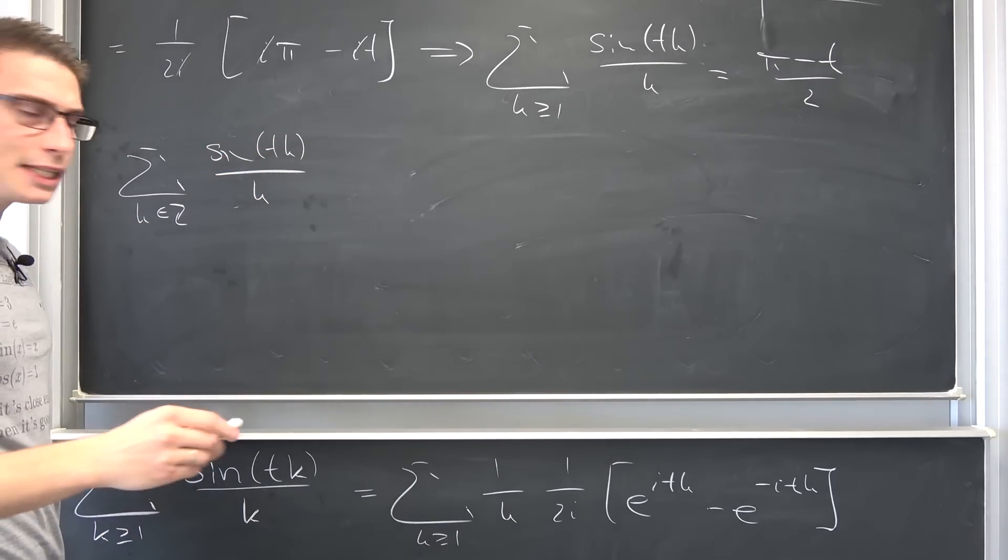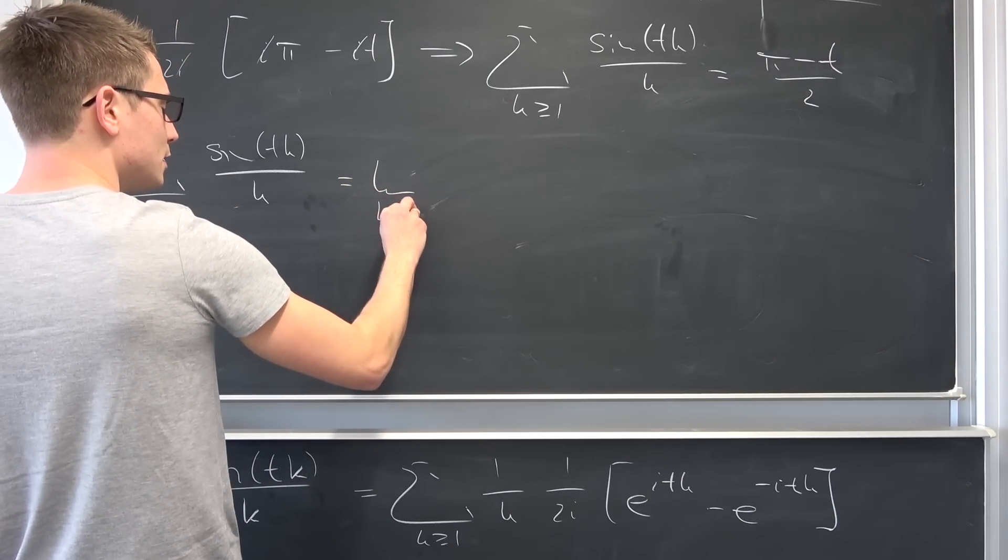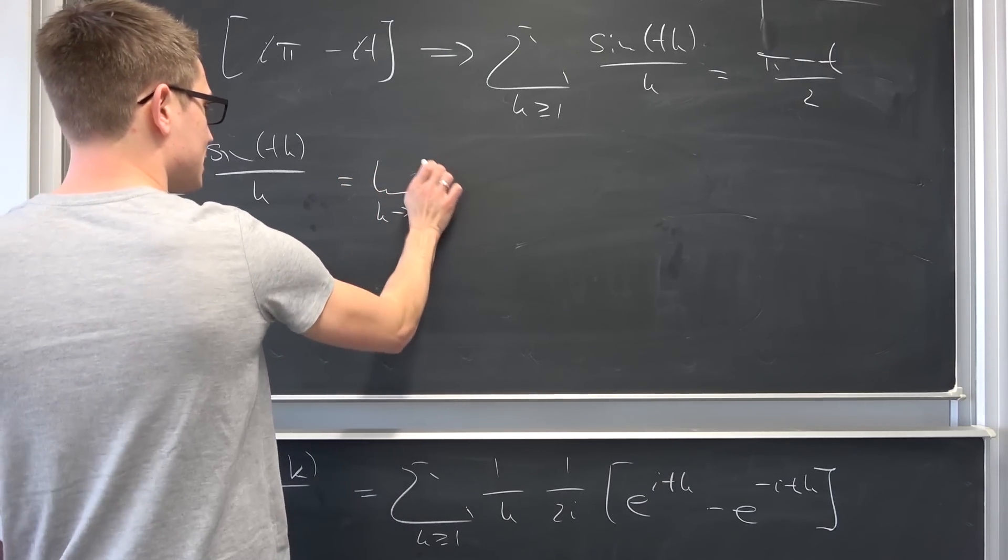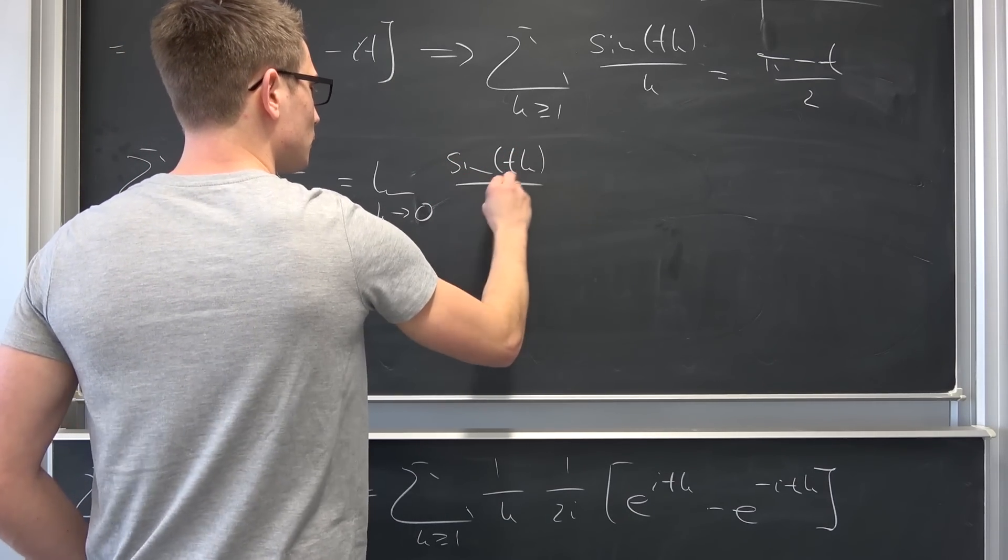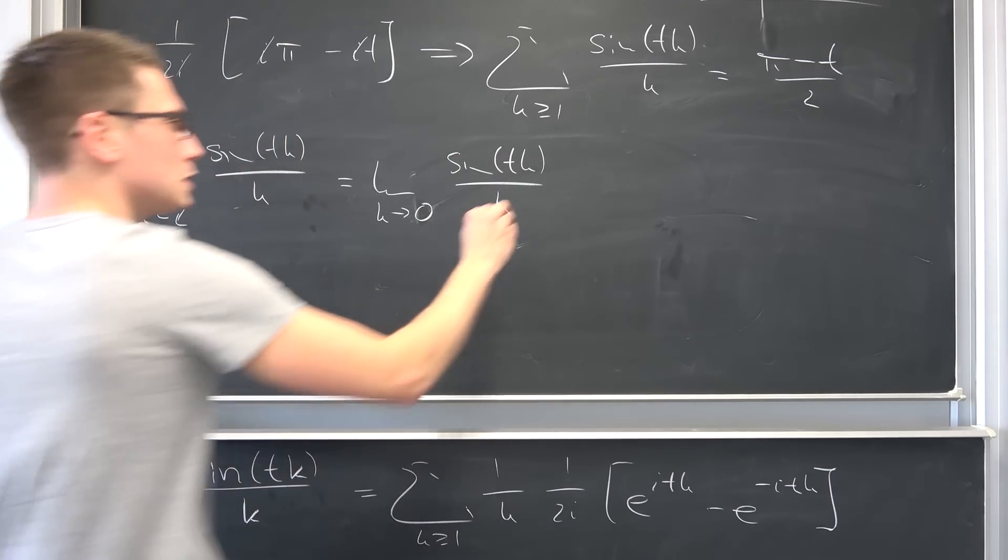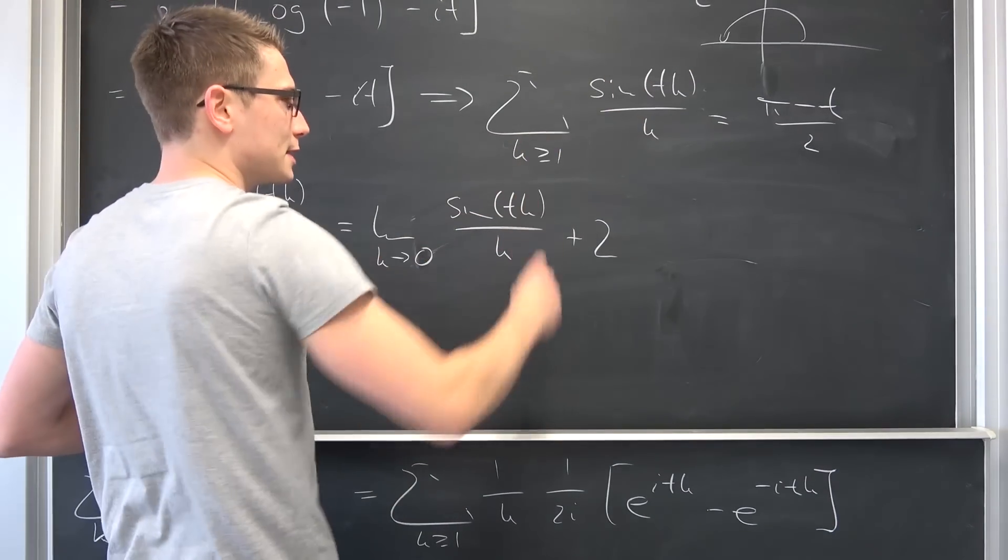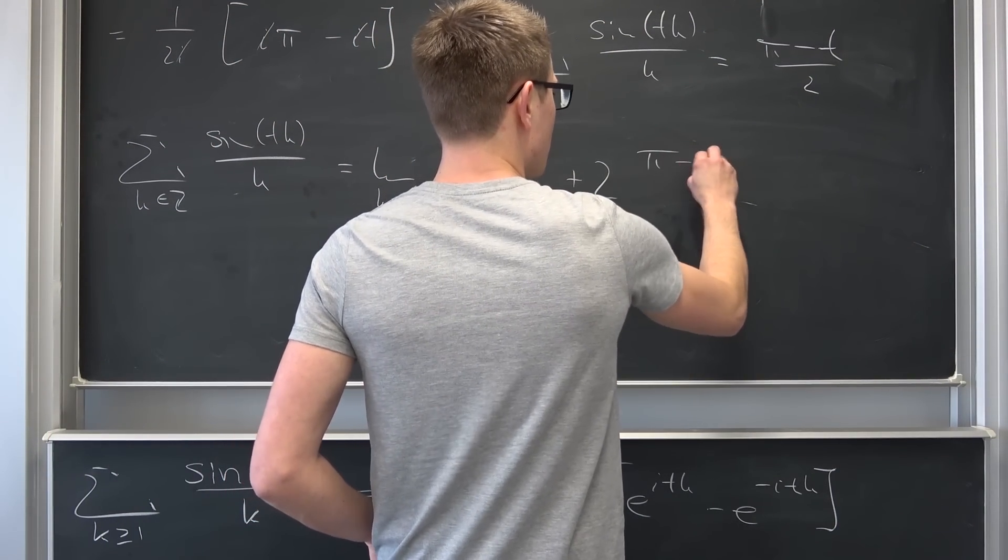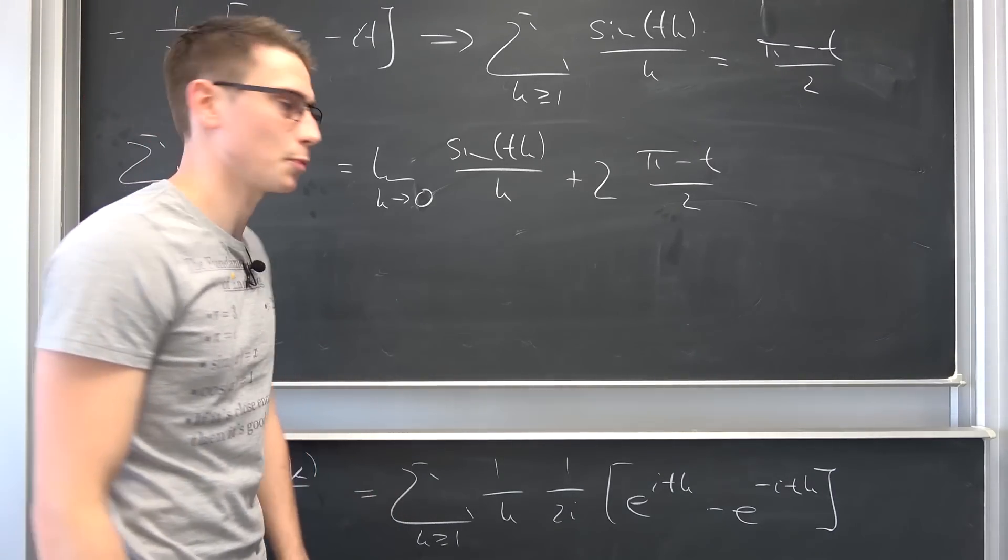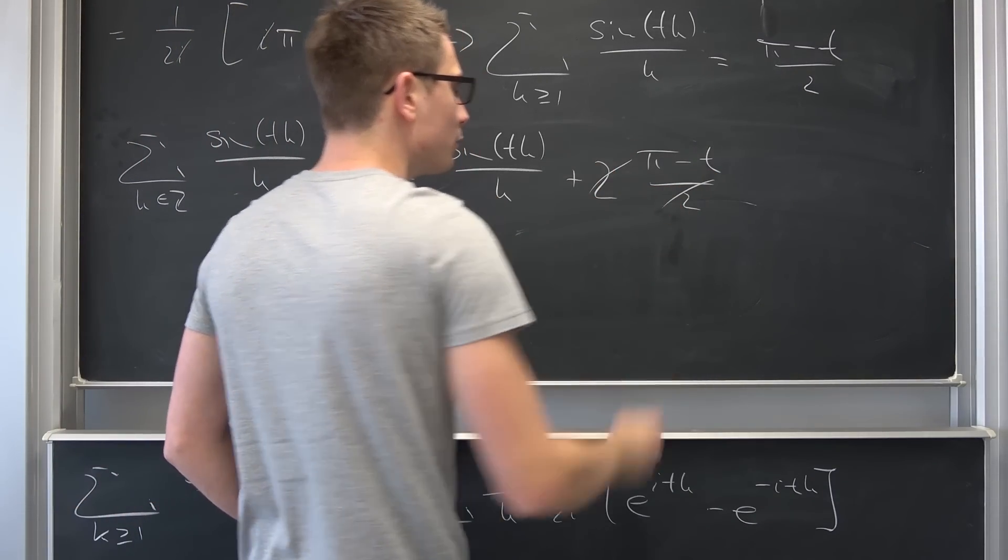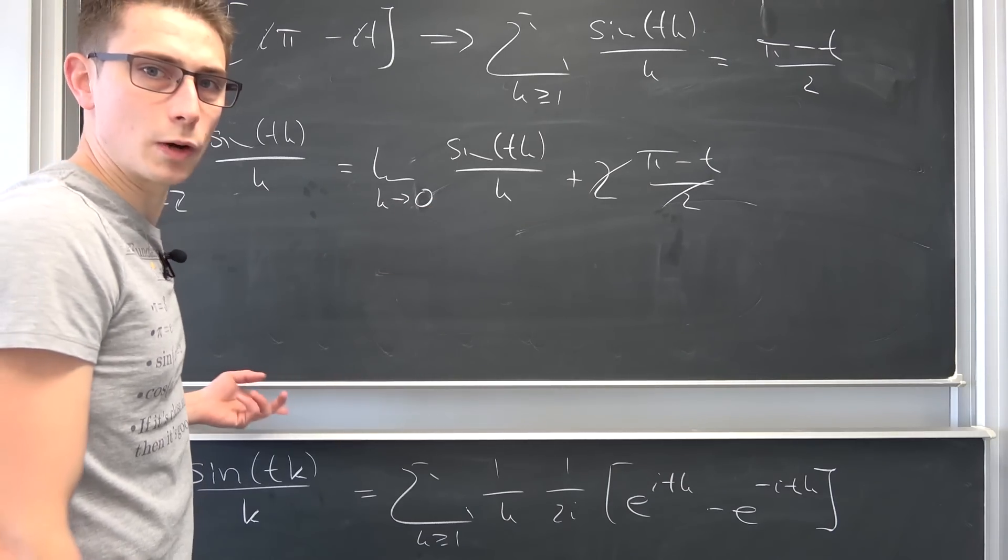Sine of tk over k. We decompose this into the limit as k approaches zero in this case, I'm terribly sorry, of sine of tk over k plus 2 times exactly this thing right here. 2 times pi minus t over 2. Just take a look at the top of the description that will be linked to the corresponding video. 2 and 1 half is going to cancel out pi minus t. And what about this limit?